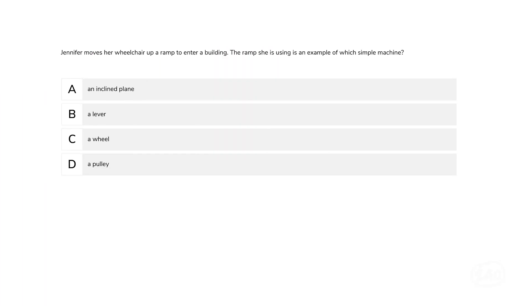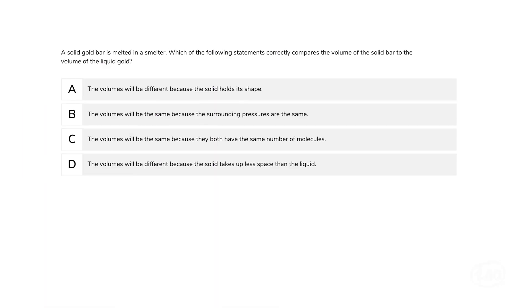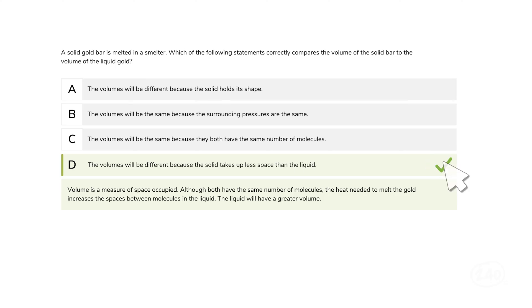Now we're moving on to the actual science questions, starting with physical science — specifically simple machines. Jennifer moves her wheelchair up a ramp to enter a building. The ramp she is using is an example of which simple machine? While all the answers listed are simple machines, an inclined plane or ramp is the example of a simple machine which increases the distance of travel but decreases the force needed. Let's look at another question on matter. A solid gold bar is melted in a smelter — which statement correctly compares the volume of the solid bar to the volume of the liquid gold? Although both have the same number of molecules, the heat needed to melt the gold increases the spaces between molecules in the liquid, so the liquid will have a greater volume.